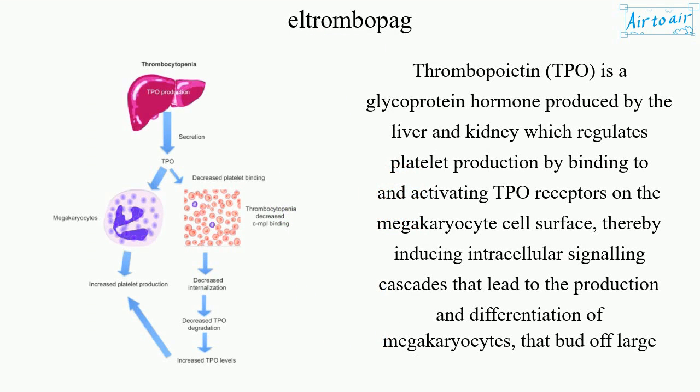Thrombopoietin (TPO) is a glycoprotein hormone produced by the liver and kidney which regulates platelet production by binding to and activating TPO receptors on the megakaryocyte cell surface, thereby inducing intracellular signaling cascades that lead to the production and differentiation of megakaryocytes that bud off large numbers of platelets.